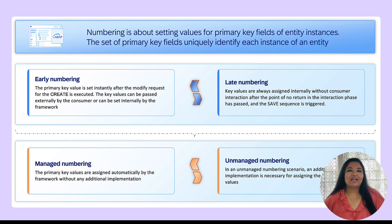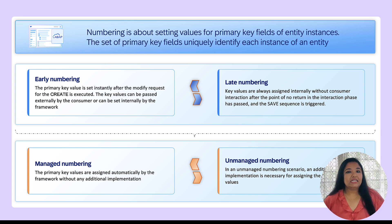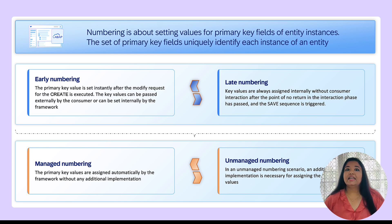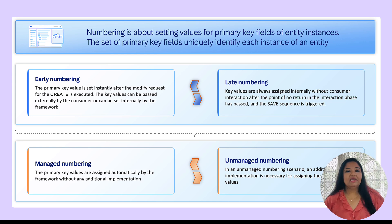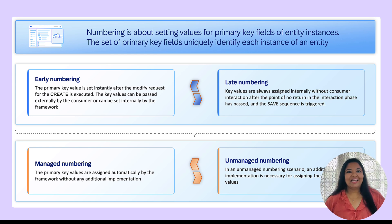We can have managed or unmanaged scenarios in numbering. In a managed numbering scenario, the primary key values are assigned automatically by the framework without any additional implementation in the behavior pool. An example is the assignment of UUID fields, which is done using the syntax 'numbering managed'. In an unmanaged numbering scenario, additional implementation is necessary for assigning the primary key values even when going ahead with early numbering or late numbering. Let us focus today on unmanaged numbering and with the help of a quick demo, see how early numbering and late numbering work differently for the same application.